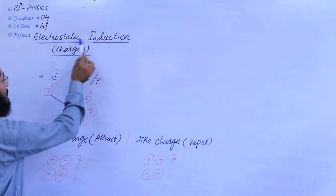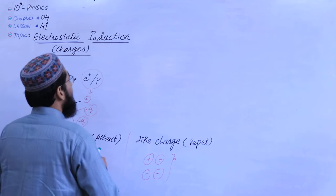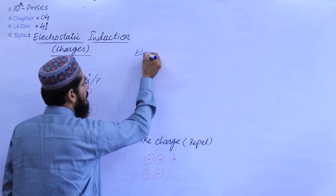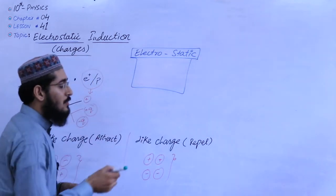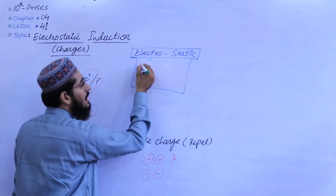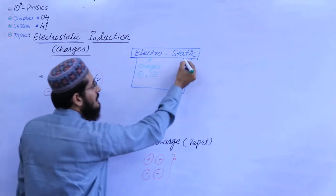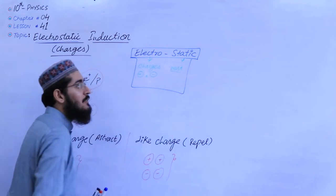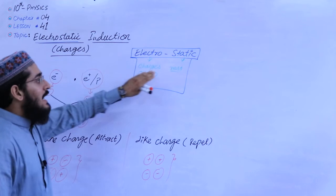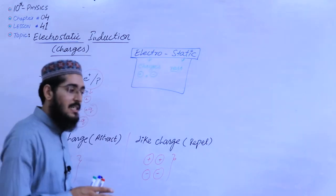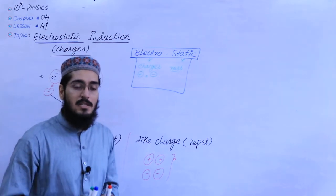Now, having understood charges, let us move to electrostatic induction. First, let us understand what is meant by 'electrostatic.' 'Electro' means discussion about charges — whatever the charge, positive or negative — and 'static' means in a state of rest. So we can simply define electrostatics or static electricity as: the study of charges at rest is called electrostatics. It has two names — static electricity and electrostatics.